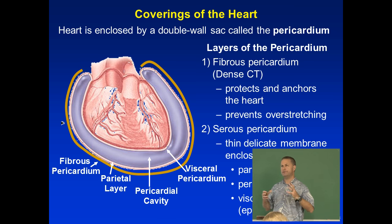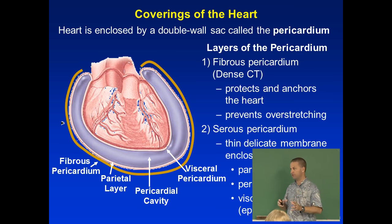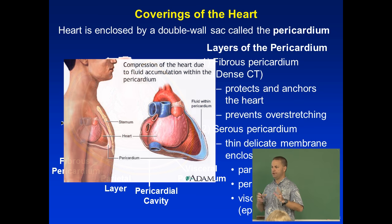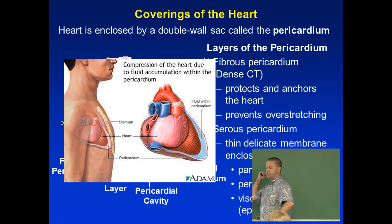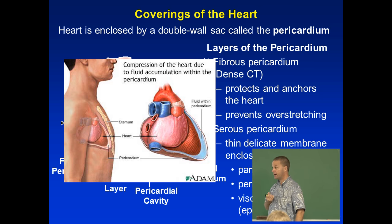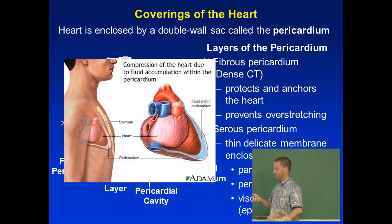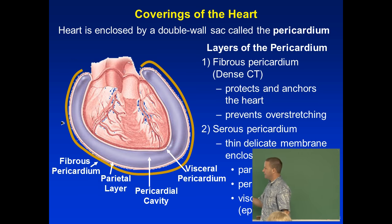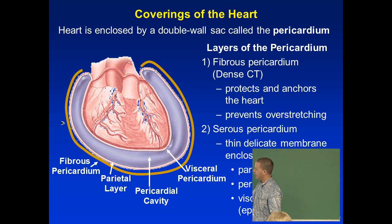Sometimes the pericardial sac becomes full of too much fluid — that's called cardiac tamponade. That makes it harder for the heart to expand and contract. In those cases, a needle is inserted into the chest to drain the fluid from the pericardial sac, and the patient can recover quickly.